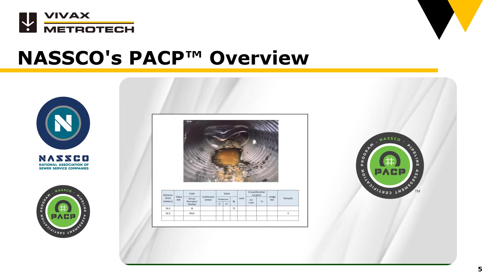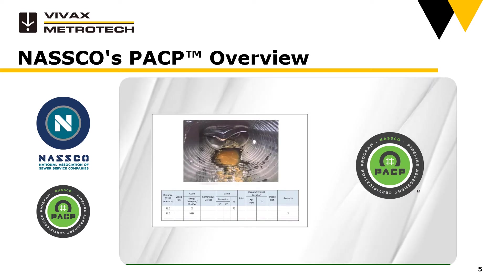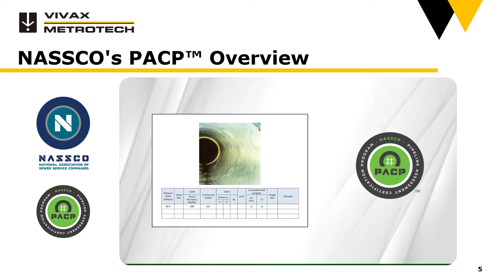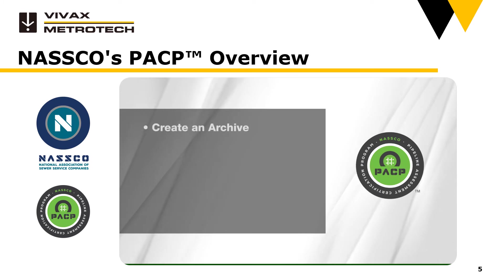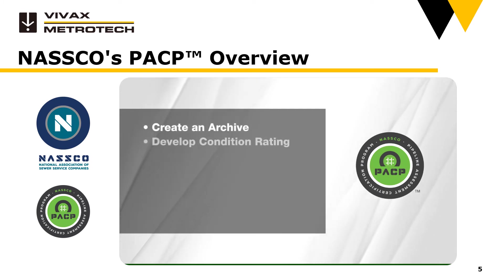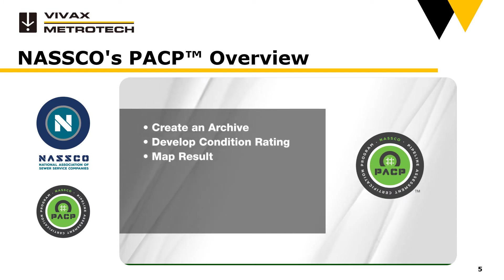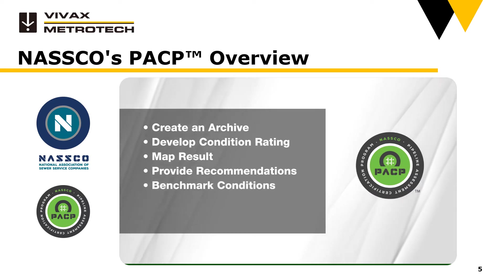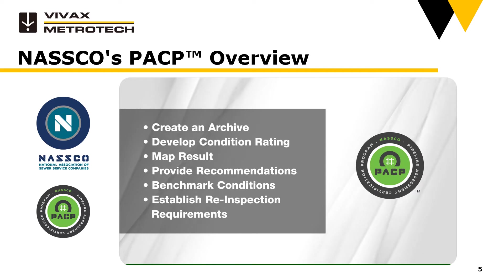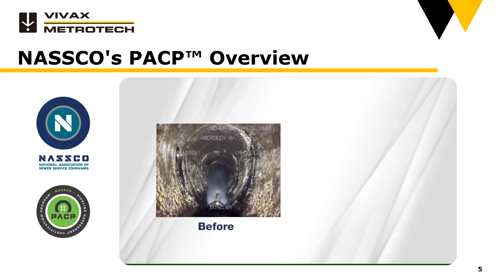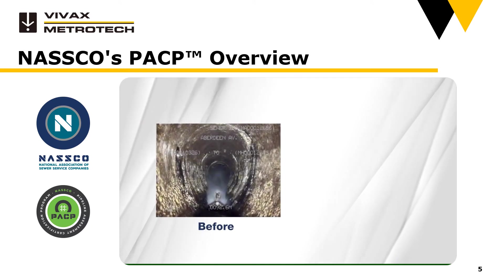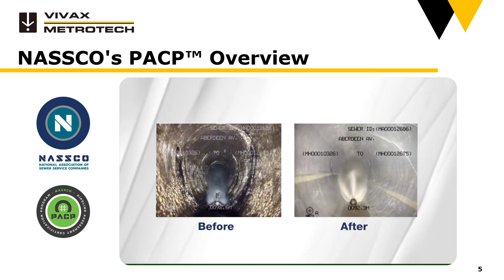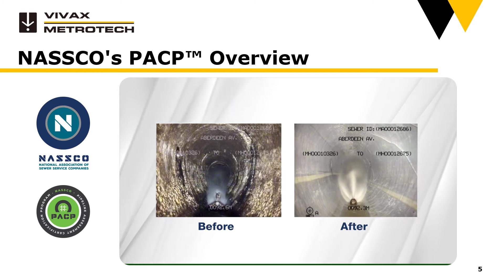This can be accomplished since defects are correctly identified and coded regardless of how many defects are encountered in the segment. The data are then used as a basis for the following: create an archive of all descriptive pipe system data; develop a condition rating for each pipe segment; display results on a map; provide follow-up recommendations; establish benchmarks to compare with future inspections of the same line, providing the ability to chronicle deterioration; and establish re-inspection frequencies and repair, rehabilitation, or replacement needs. With PACP we have organization, tracking, forecasting, and prioritization capabilities for rehabilitation and replacement planning.